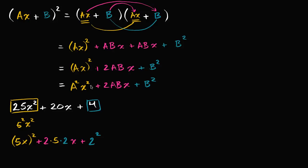So you see that this completely matches this pattern here, where A is equal to five and B is equal to two. Once again, this is Ax whole thing squared, then you have two times A times B times x, and then finally you have the B squared.